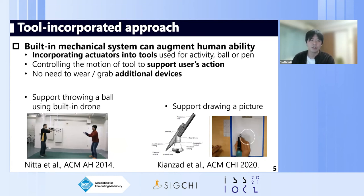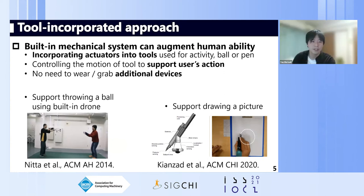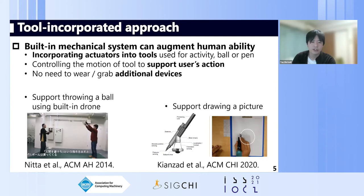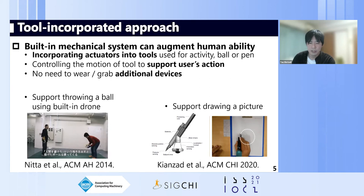By incorporating actuators, there is no need for users to wear or grab additional devices. The left figure shows a good example of this concept — in the video, the user can control the trajectory of the blown ball using a built-in multicopter. The right figure shows a system supporting drawing, where the user uses a pen with a built-in ball-type actuator that controls the pen's motion to help with two-dimensional drawing.